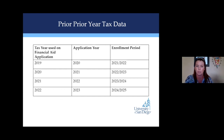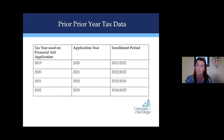This chart shows that you are using tax information from one year, applying in a different year, for enrollment during a different year. For those of you that are seniors, you're going to be filling out the FAFSA in 2020 for the 21-22 academic year, using 2019 tax information. This will show you what will be happening over the next four years. There is an appeal process where you can base your financial aid eligibility on what's currently happening in your family, as opposed to two years ago.